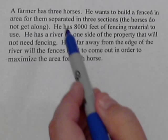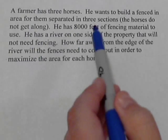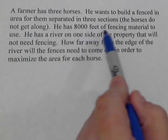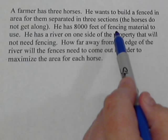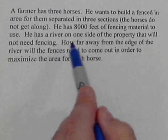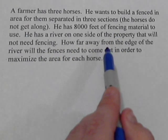So we want to make a rectangular area that's broken into three sections. He's got 8,000 feet of fencing that he can use. Also he's got a river on one side of the property so we don't need to fence that side.